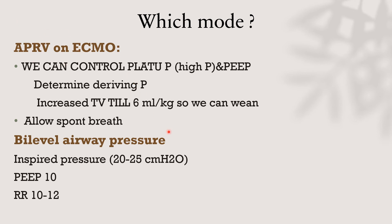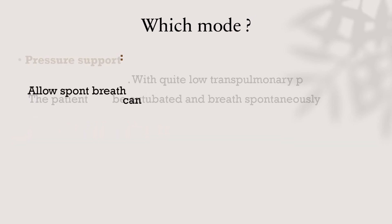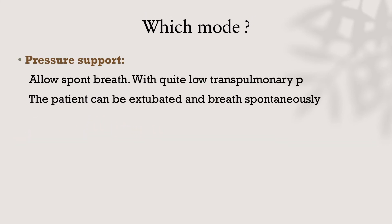Alternatively, we can use bi-level airway pressure. When using bi-level airway pressure, inspiratory pressure is set at 20 to 25 cm water, with PEEP at 10, giving a driving pressure of 10 to 15 cm water, and respiratory rate of 10 to 12 cycles per minute. Pressure support ventilation allows spontaneous breathing with quite low transpulmonary pressure. The patient can also be extubated and breathe spontaneously.